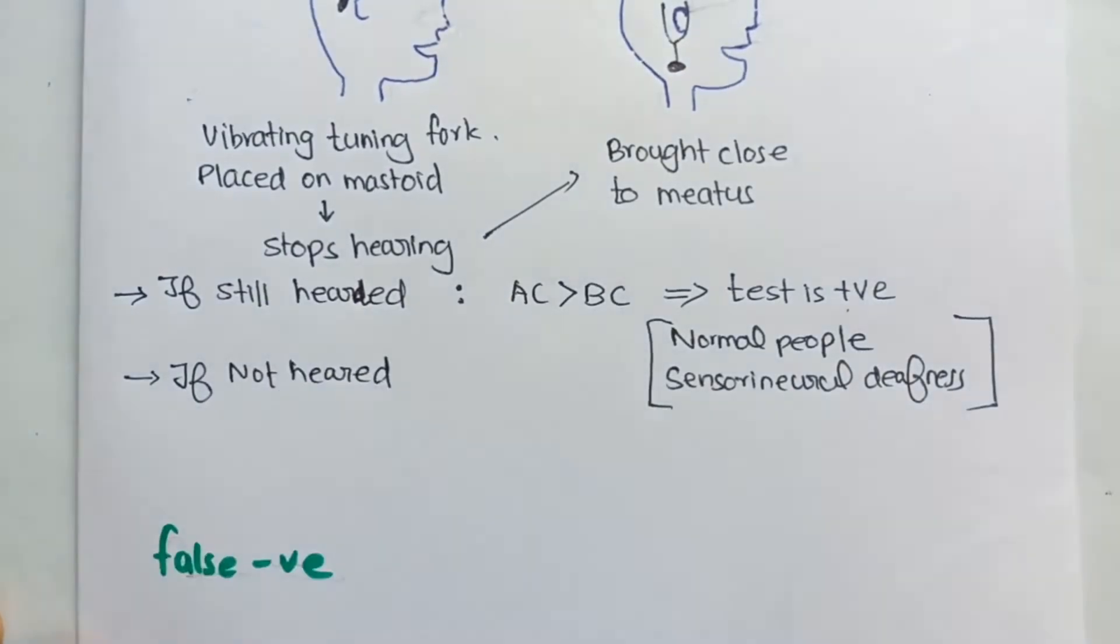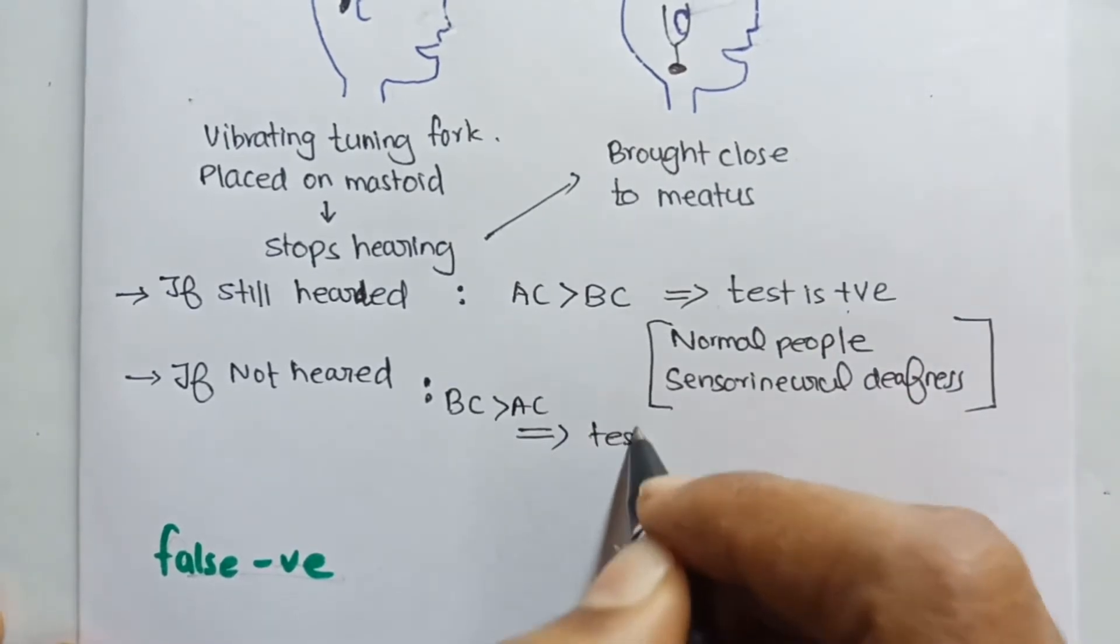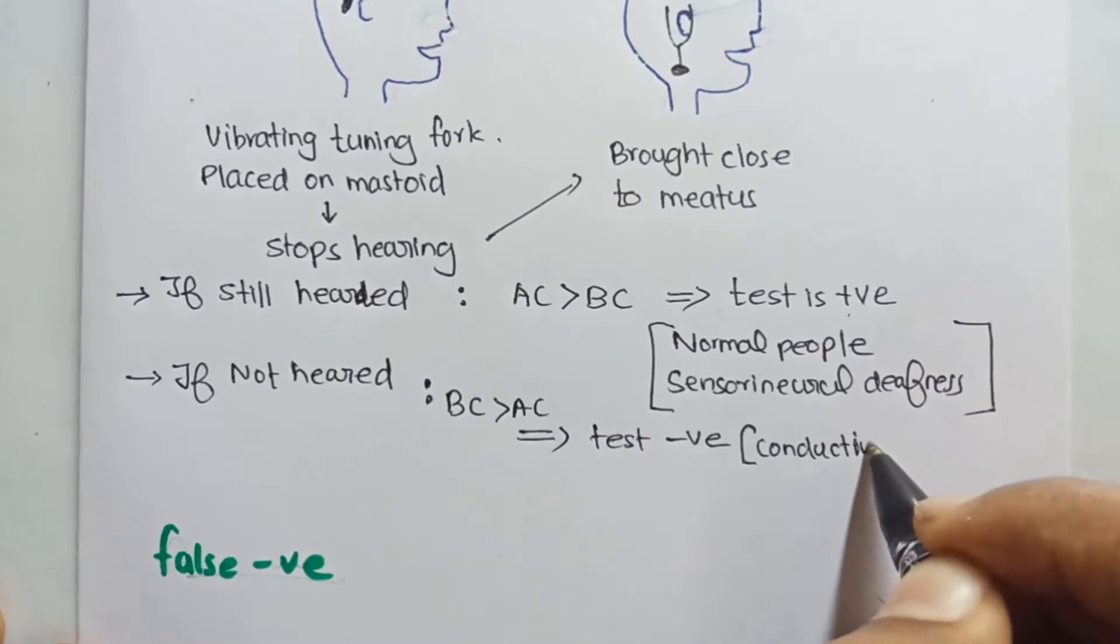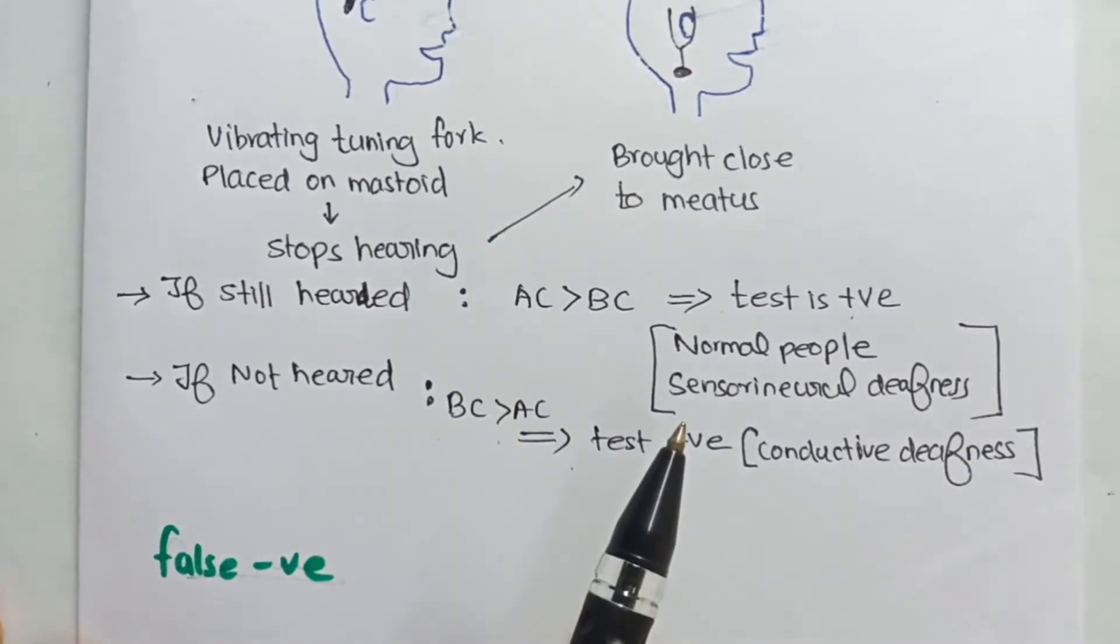Now if the sound is not heard before the meatus, it means that the bone conduction will be greater than that of air conduction, and the test is negative. Such cases are seen in conductive deafness.